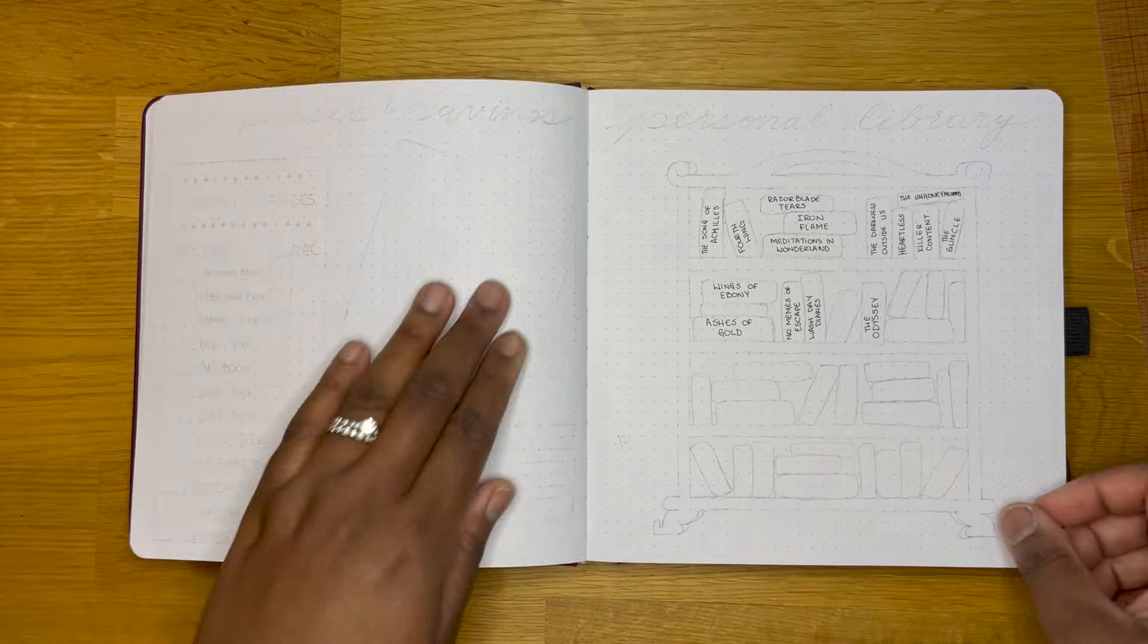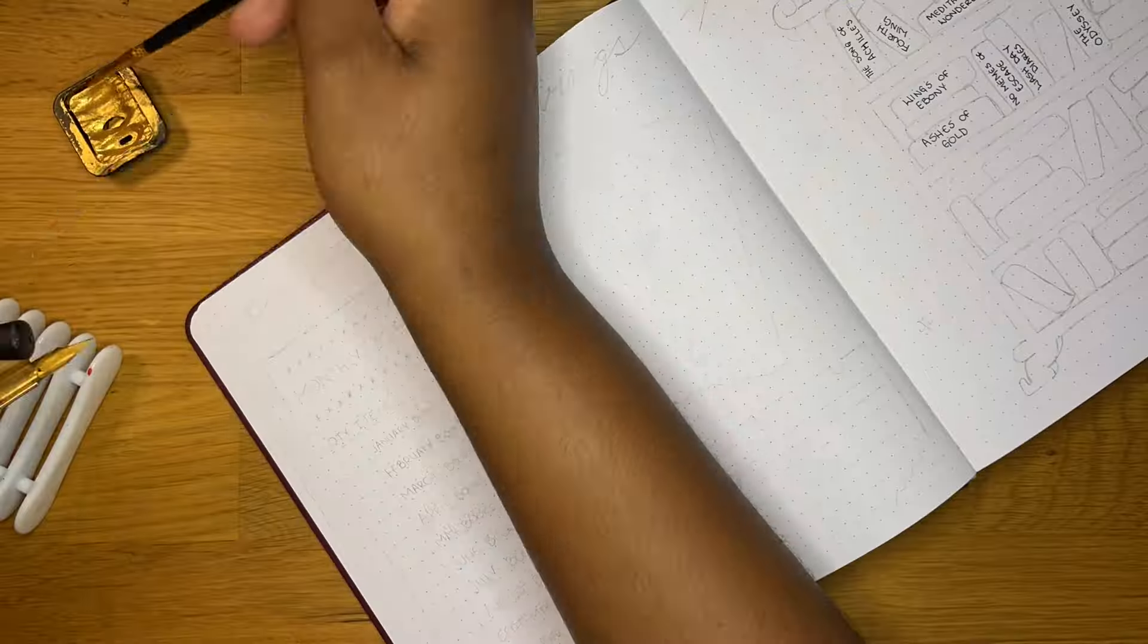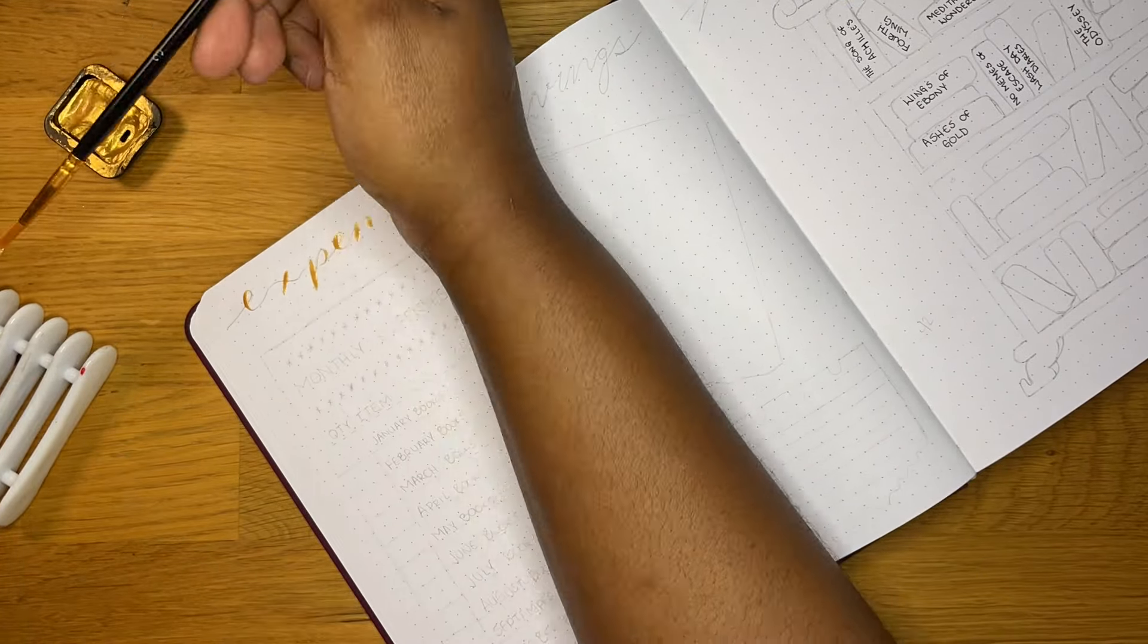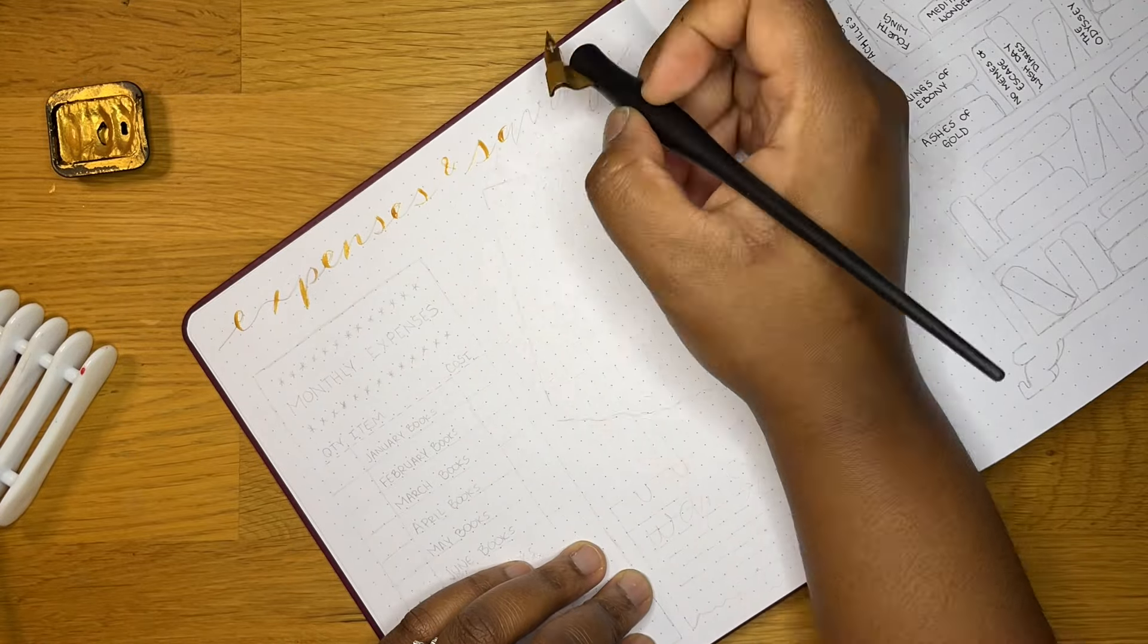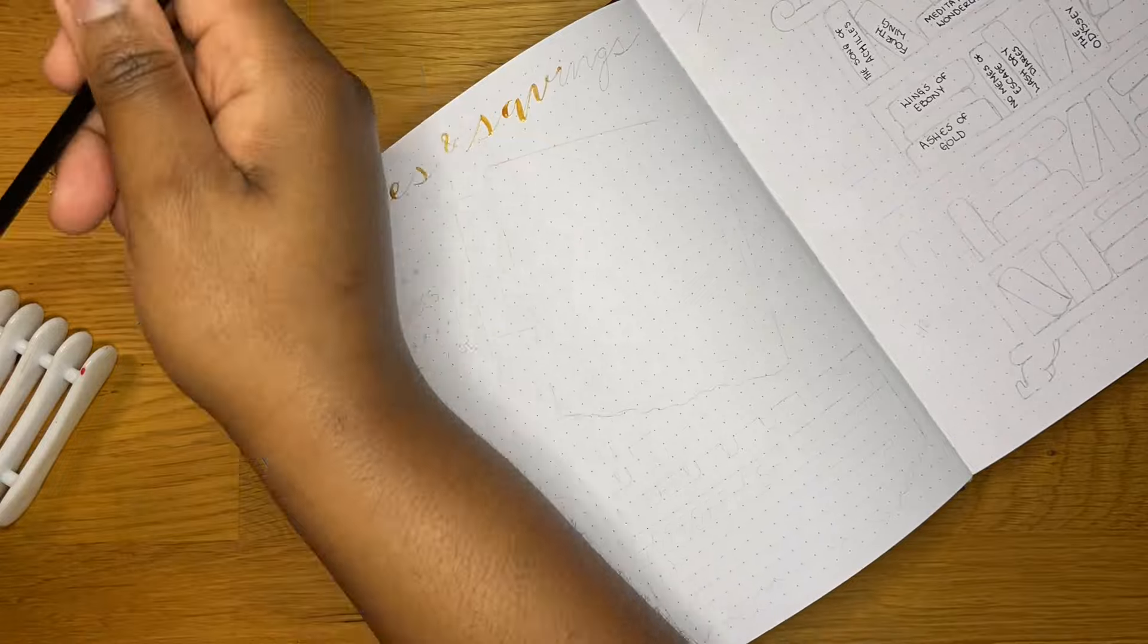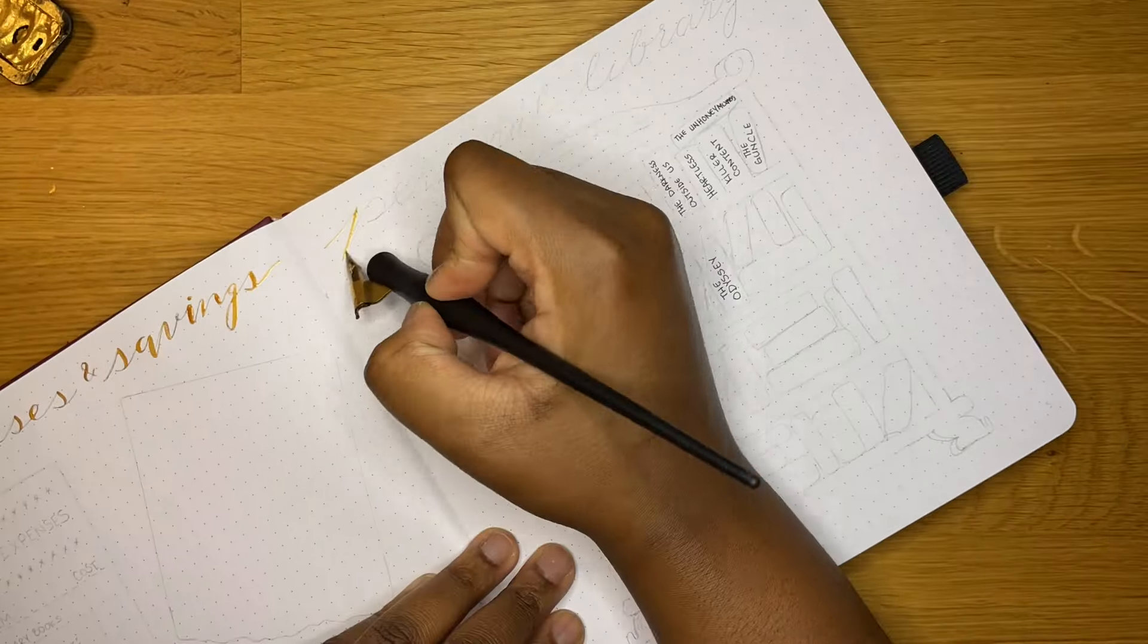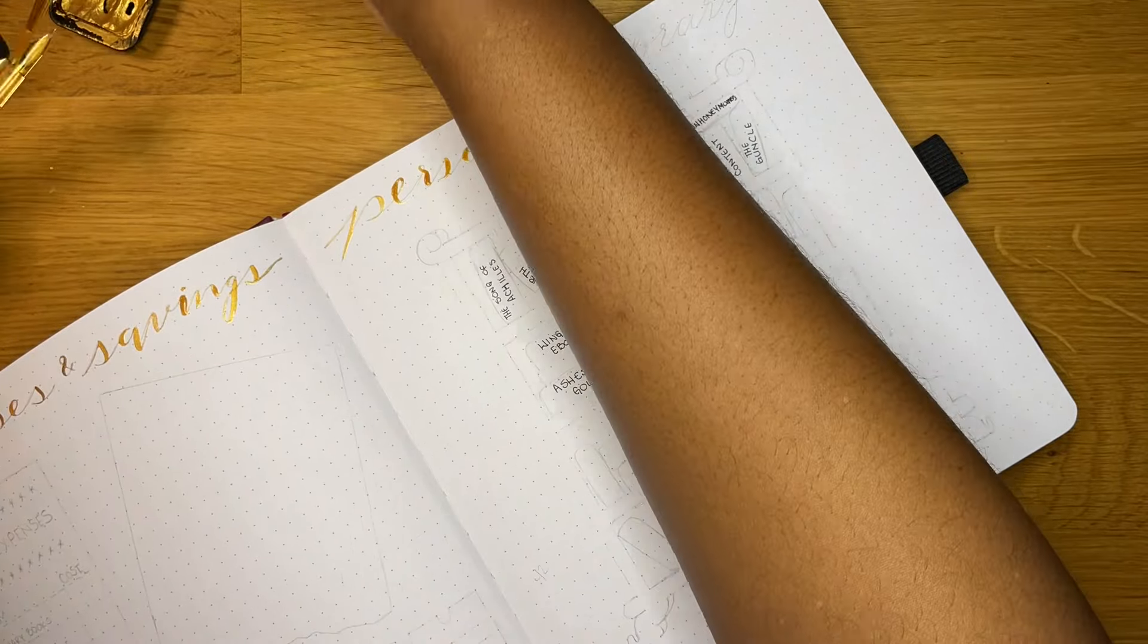I was really excited to set up these next two pages. On the left hand side I have my expenses and savings, and on the right hand side I have my personal library. One of my last pages I made in my 2023 reading journal was how much money I spent on books and how much I saved by going to the library. I ended up saving over $670 by reading library books. I am a library girly. I love a free book.